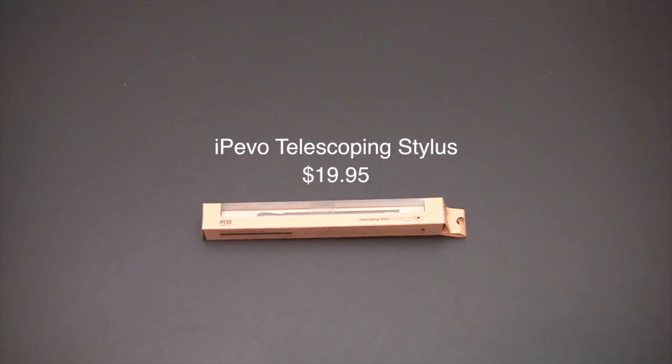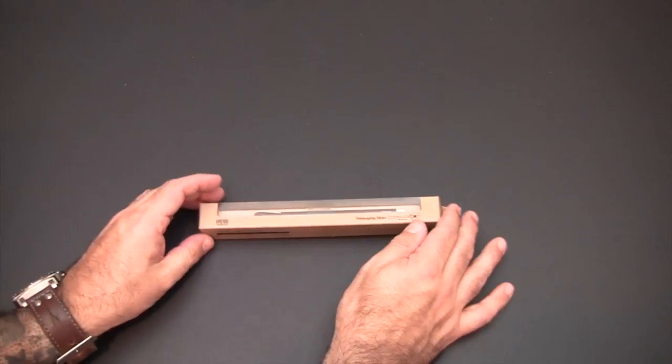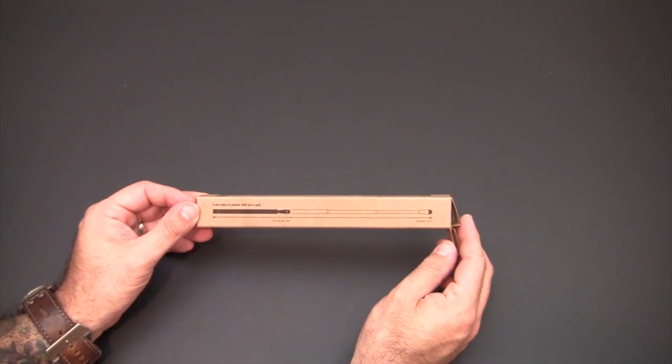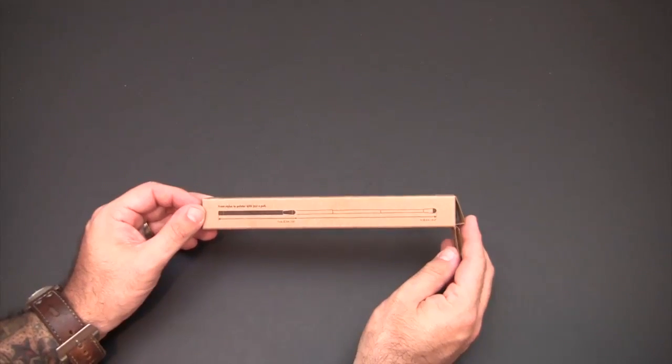What's unique about it, it goes from 5.4 inches all the way out to 15.2 inches. So essentially it starts out as a garden variety stylus and then expands all the way out that you can use as a pointer.